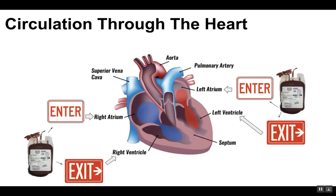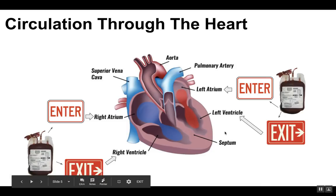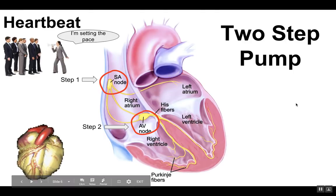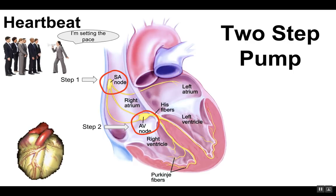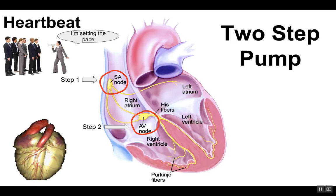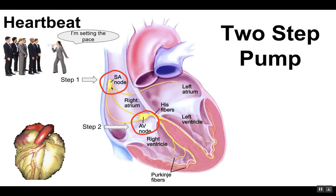When the valves are open, blood moves from the atria to the ventricles. When the valves close, the blood in the ventricles is forced out to the rest of the body. Your heartbeat works as a two-step pump — there are two networks of muscle fibers in your heart, one in the atria and one in the ventricles. If you stimulate any one fiber they all contract as a unit. It starts with the sinoatrial node in the right atrium, which sets the pace — it's your body's natural pacemaker.